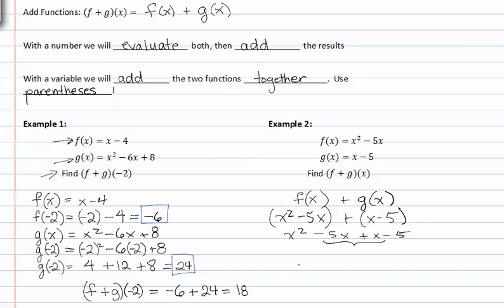These like terms combine, and we get x squared minus four x minus five. This is f plus g of x.